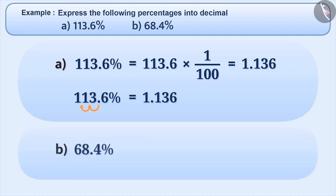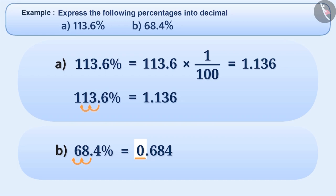Similarly, to express 68.4% in decimal, we will move the decimal point two positions towards the left. Since there is no digit before the digit 6, we will write the placeholder 0. By doing so, we get the decimal form of 68.4% as 0.684.